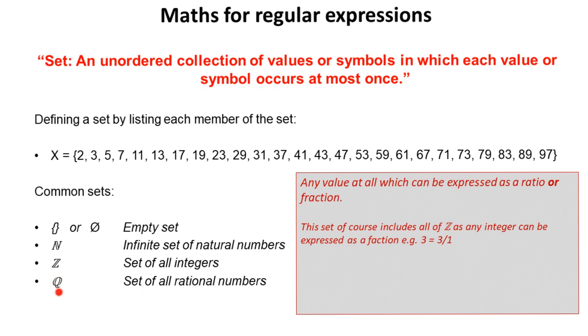The shorthand symbol for a set of all rational numbers is Q. And this is any value which can be expressed as a ratio or a fraction. It's important to note here that this set includes all of set Z, because any integer can be expressed as a fraction. So the whole number three could also be expressed as a fraction as three over one.